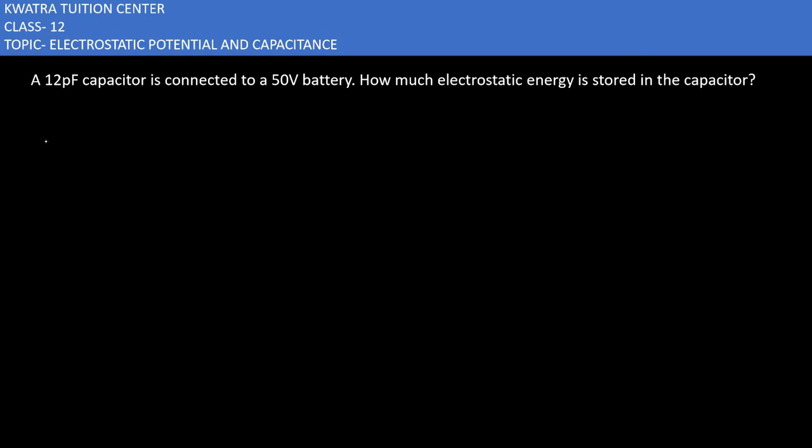Starting with the 8th part here, a 12 pF capacitor is connected to a 50 V battery. How much electrostatic energy is stored in the capacitor? Now we have voltage here, how much is it?